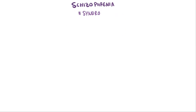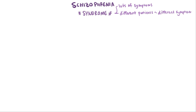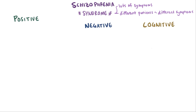Schizophrenia is actually a syndrome, meaning there are all sorts of symptoms that might be associated with it, and different patients might experience different symptoms, although the symptoms can be broadly categorized into three major areas: positive symptoms, negative symptoms, and cognitive symptoms.